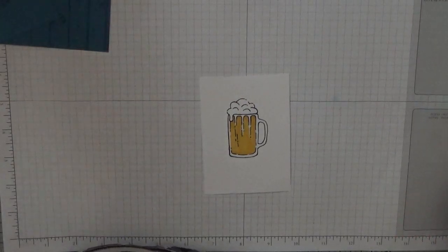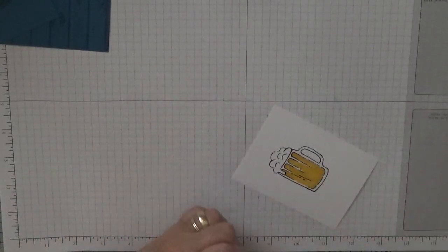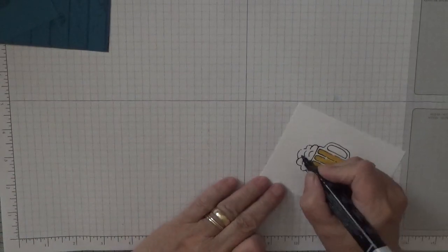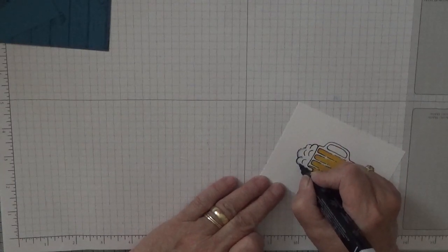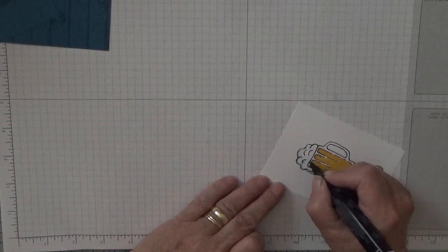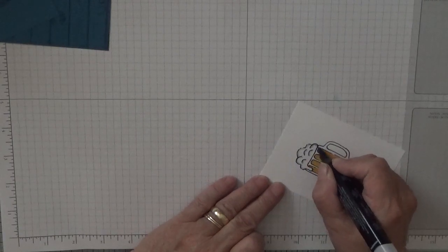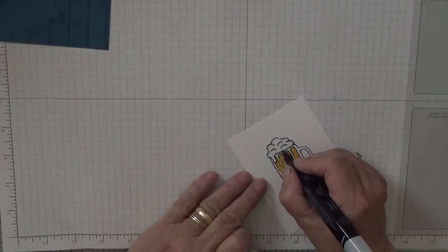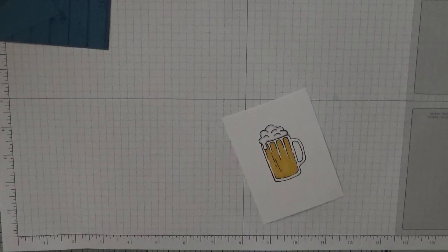Now for the froth, what I did with the froth, I've got Smoky Slate, and I just went round the foamy bits with a bit of Smoky Slate just to make it stand out a little bit.